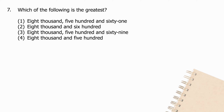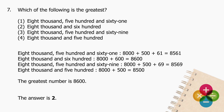Question 7: Which of the following is the greatest? 8500 + 61 = 8561. 8000 + 600 = 8600. 8500 + 69 = 8569. 8000 + 500 = 8500. The greatest number is 8600. The answer is 2.